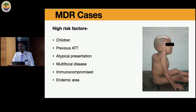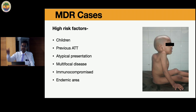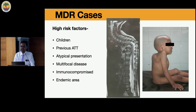MDR cases are one of the most common challenges we face. Most of these kids have high risk factors — they are very young with immature skeletons, most MDR cases have already been started on previous anti-tubercular treatment, and they have atypical presentations. The most common presentation is multifocal disease with cervical, thoracic, and lumbosacral involvement. Many are immunocompromised, and we are in Mumbai's endemic area with a very high threshold.